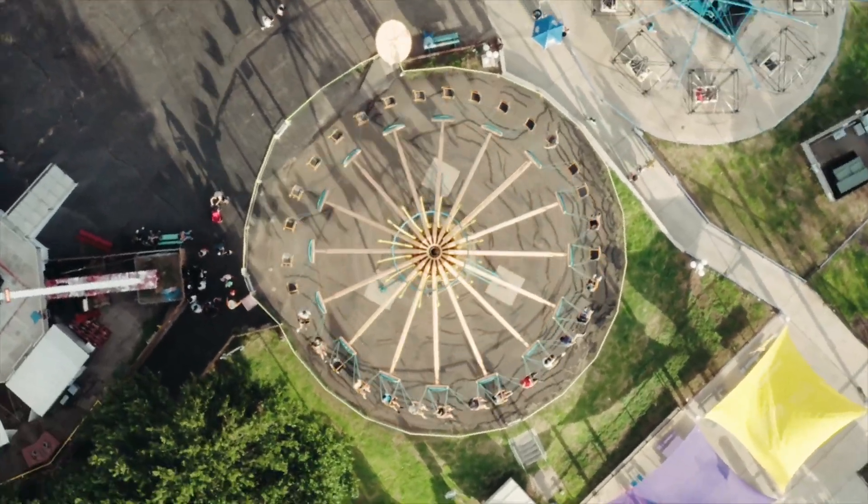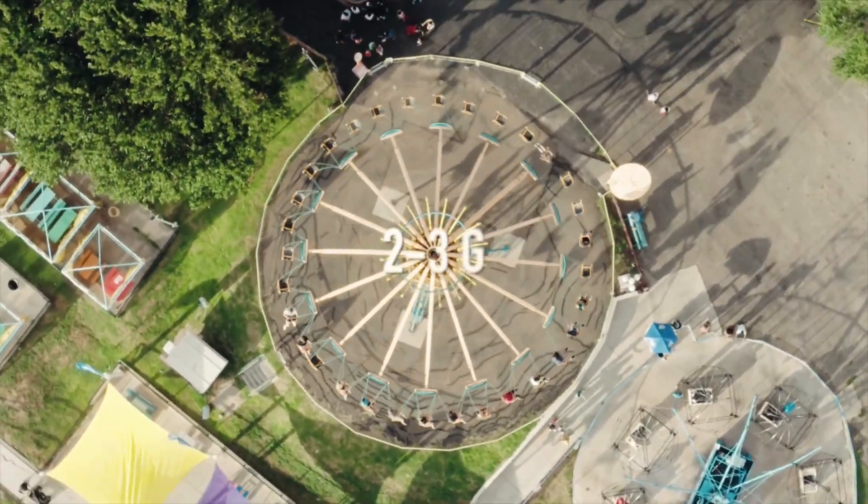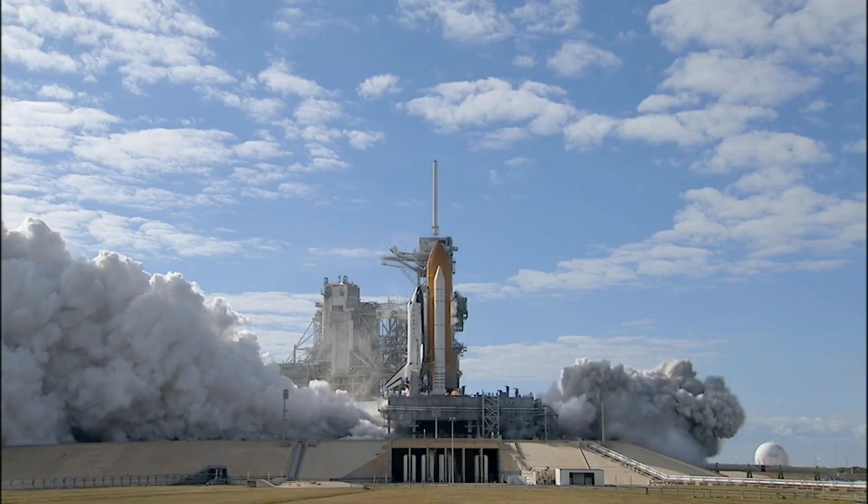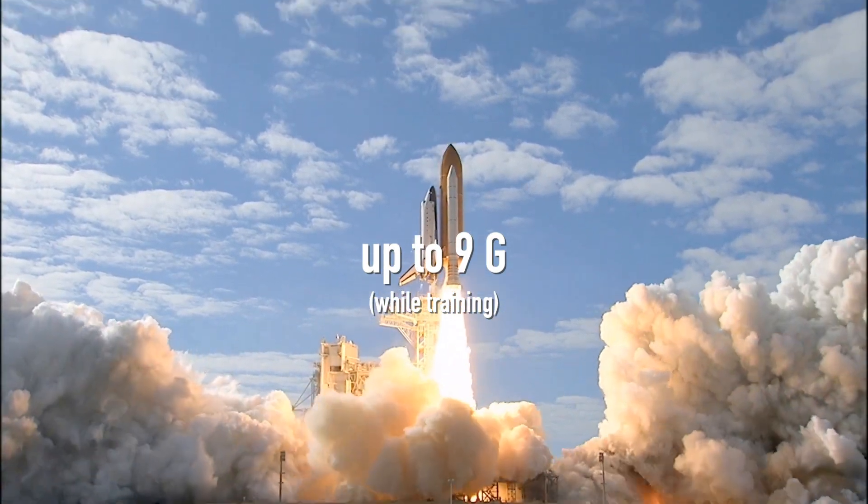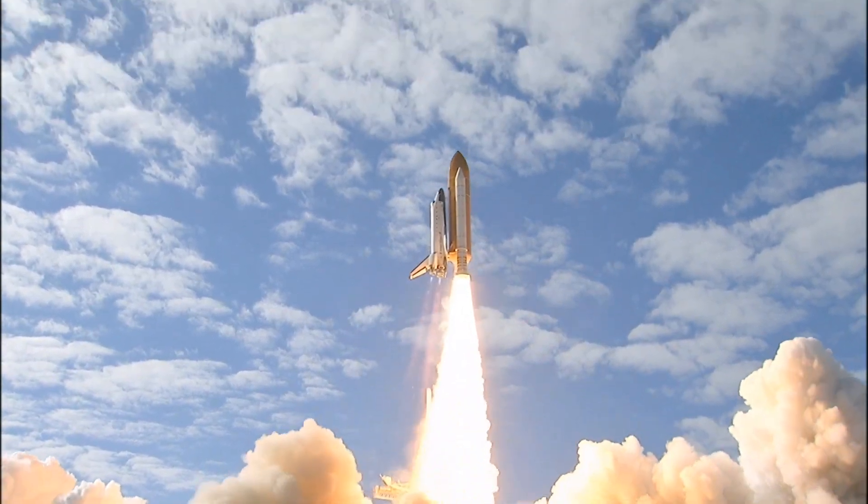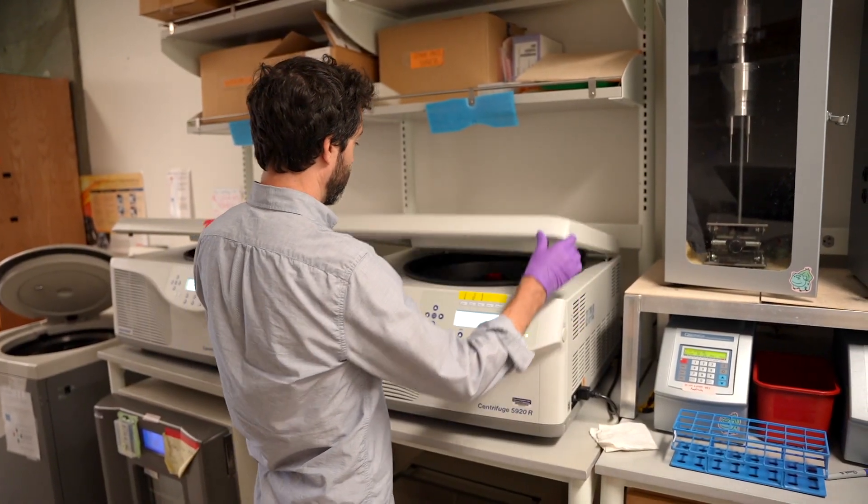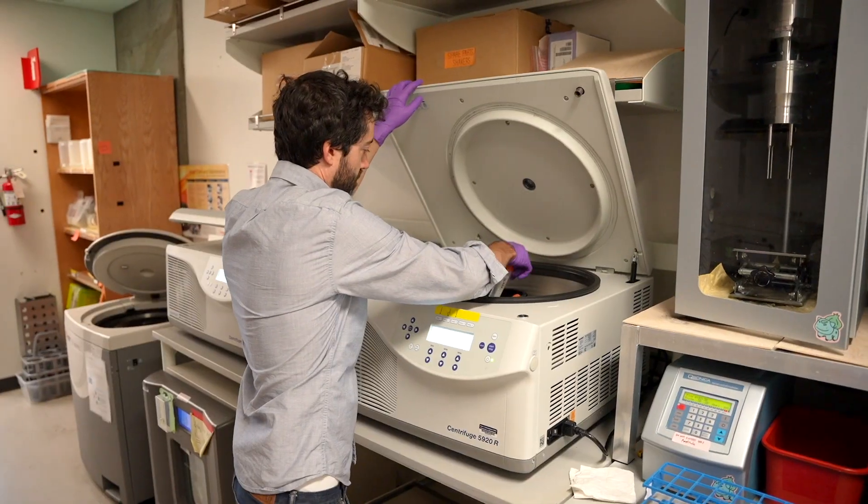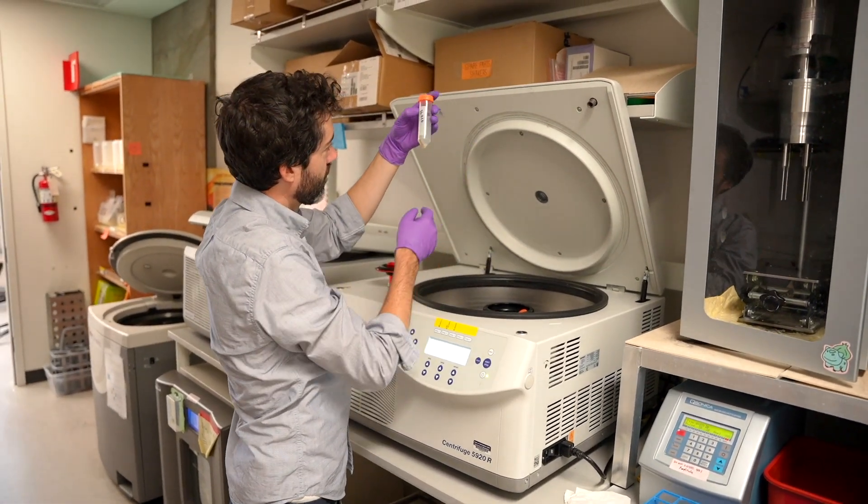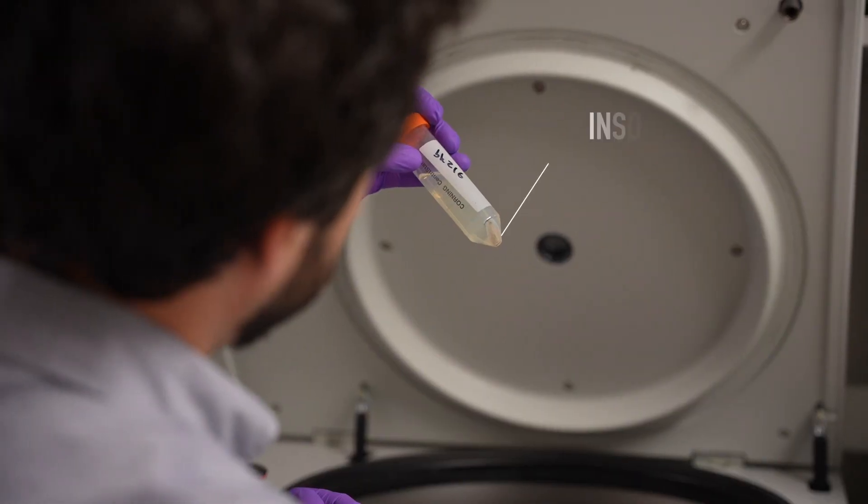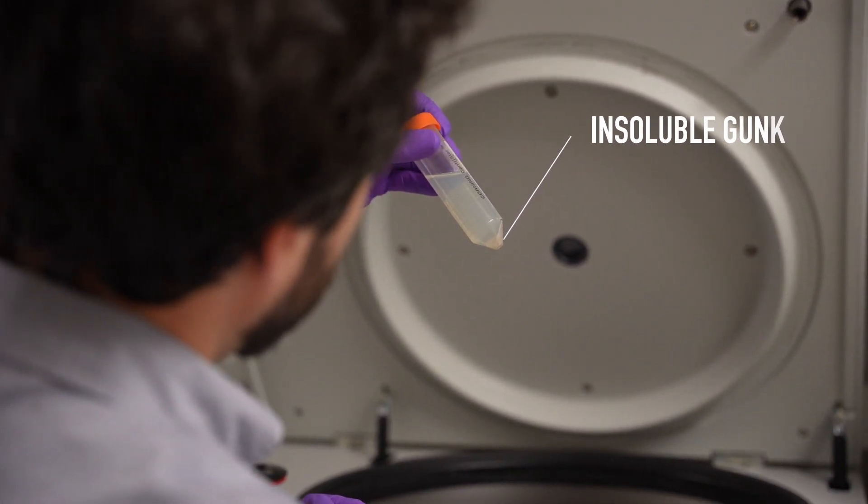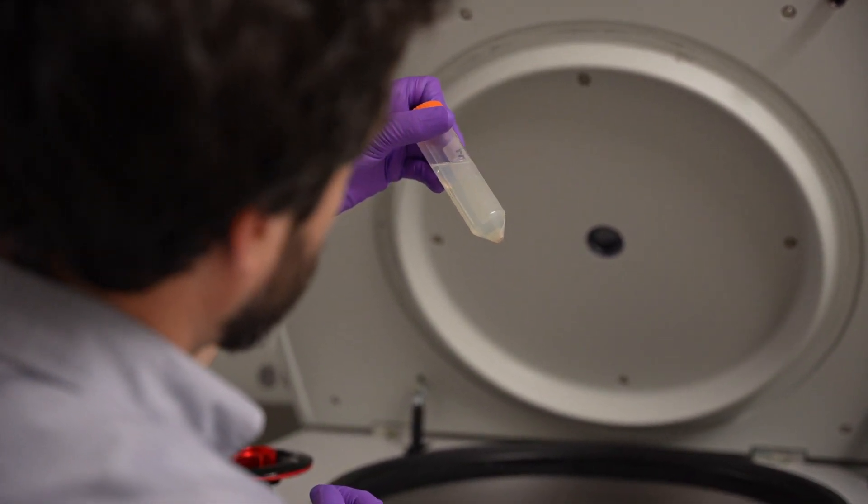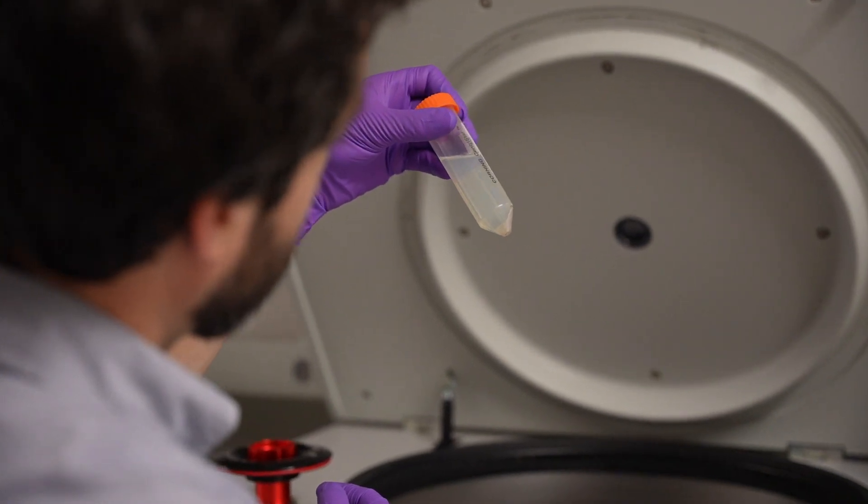For reference, a carnival ride might top out at two or three times Earth's gravity. Astronauts can sometimes endure about nine times the force of gravity before passing out, but that's only for a few seconds. After the centrifuge has been spinning for about 20 minutes, we can see some insoluble gunk has collected at the bottom of the tube, while all of our soluble proteins are still dissolved in solution. We've successfully separated the insoluble and the soluble molecules.